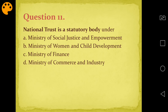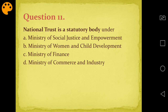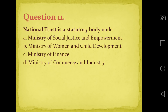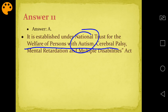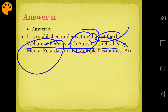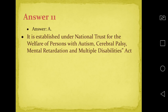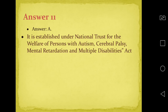Question eleven: National Trust is a statutory body under which ministry? Options are Social Justice and Empowerment, Women and Child Development, Ministry of Finance, or Ministry of Commerce and Industry. Answer is A - Ministry of Social Justice and Empowerment. National Trust is a body for welfare of people suffering from autism, cerebral palsy, mental retardation, and multiple disabilities. Since it deals with disabilities, it falls under Social Justice and Empowerment.